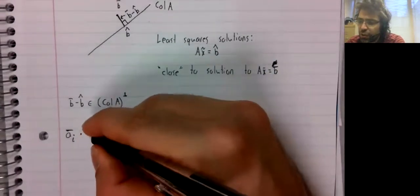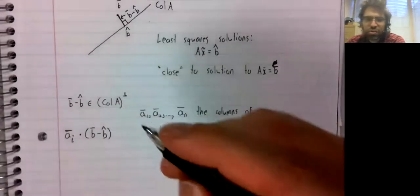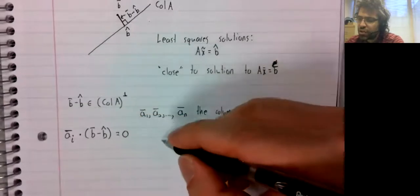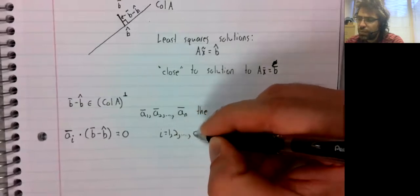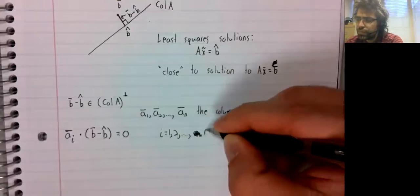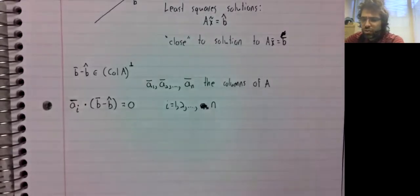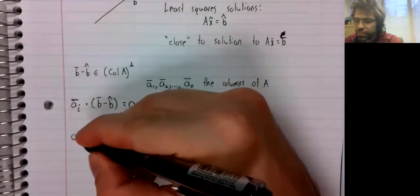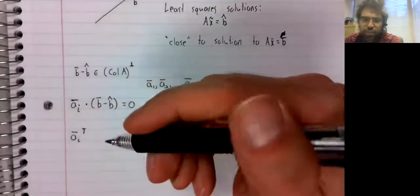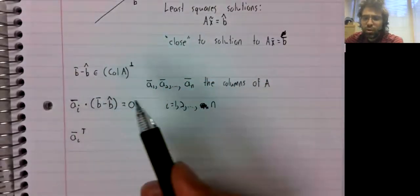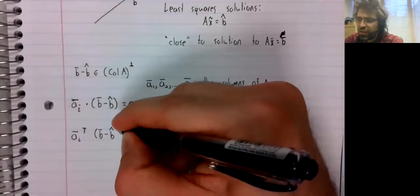That is to say, for every one of these vectors, this dot product is zero. And an alternative way of thinking of the dot product is that the dot product is essentially the product of the transpose of this vector with this vector.